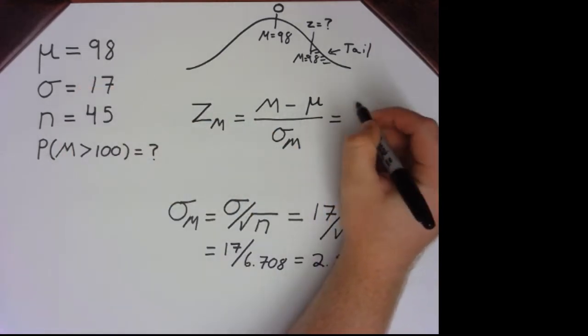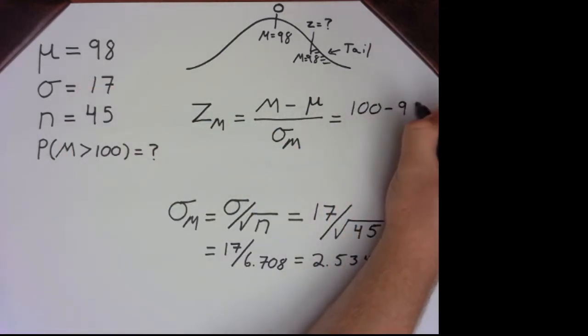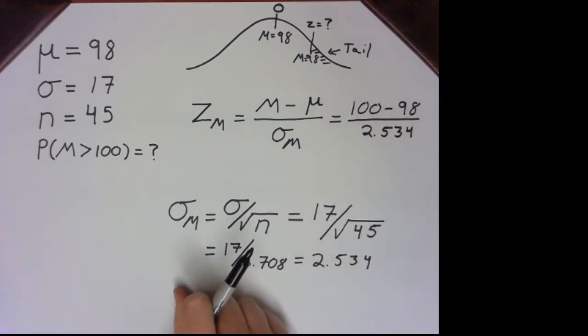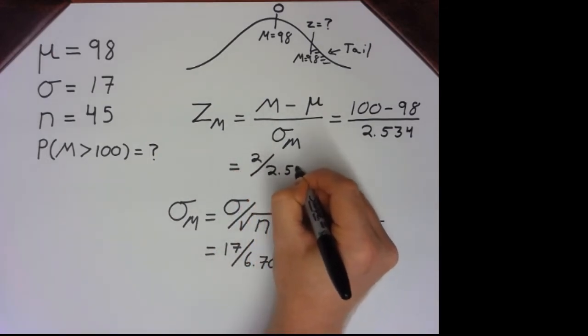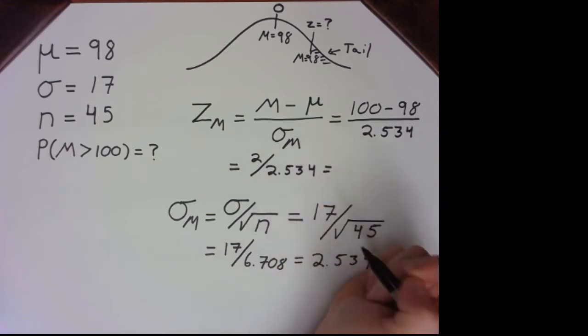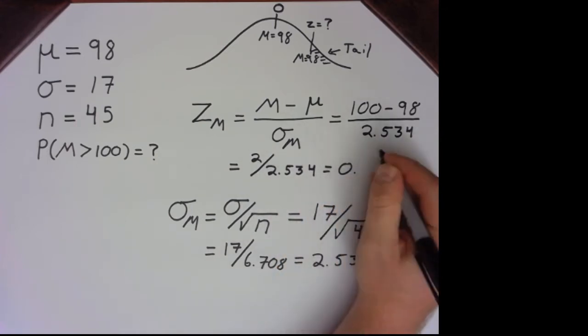And so now we just work our way back up to the top. So 100 minus 98, substitute in our new standard error that we just calculated. And we can just solve this simple math problem. So 2 divided by 2.534 gets us just under 1, specifically 0.79.